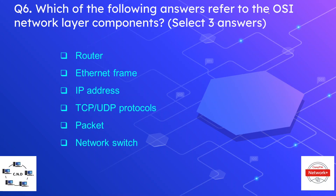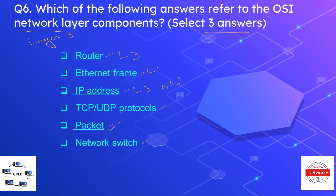Question number six is: which of the following refers to the OSI network layer components? We have to select three answers — remember network layer is layer three. The options are router, ethernet frame, IP address, TCP, UDP protocol, packet, and network switch. The correct answers are router, IP address, and packet. Ethernet frame is the data unit at layer two, TCP and UDP are layer four protocols, and network switch is a layer two device.